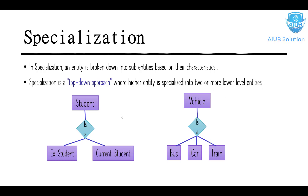Specialization is a top-down approach where a higher-level entity is specialized into two or more lower-level entities. For example, the vehicle entity can be specialized into bus, car, and train — creating more specific sub-entities. So vehicle is broken down into bus, car, and train — this is specialization.